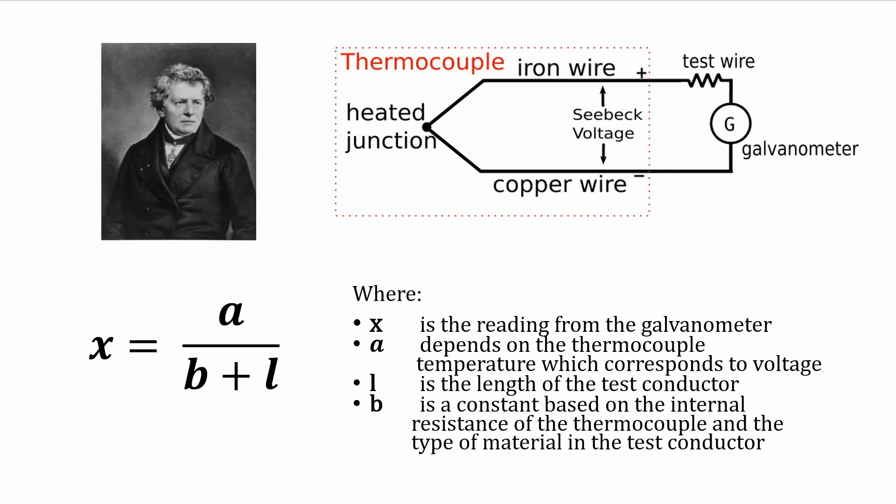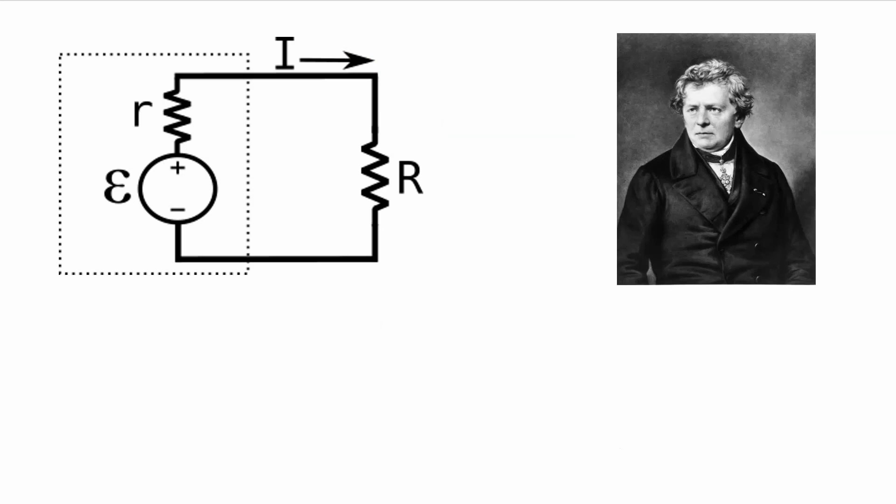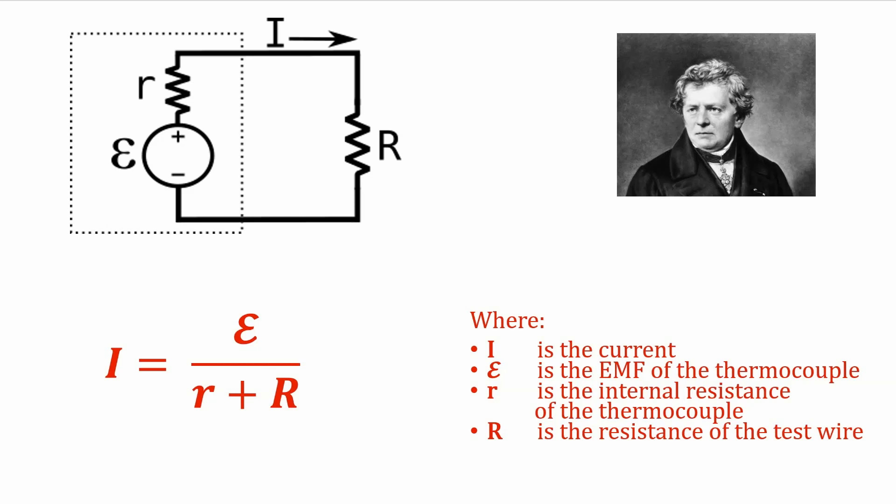In more modern circuit diagram form, the circuit looks like this. I equals E over little r plus big R, where I is the current, E is the EMF of the thermocouple, little r is the internal resistance of the thermocouple, and big R is the resistance of the test wire.